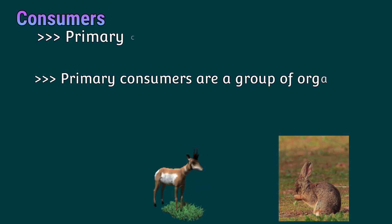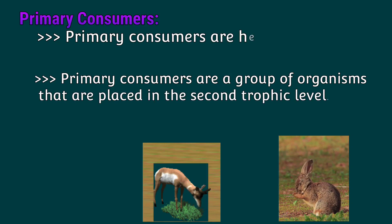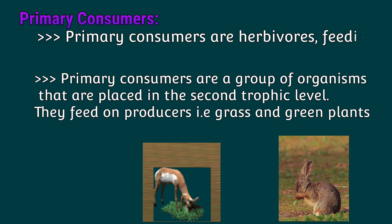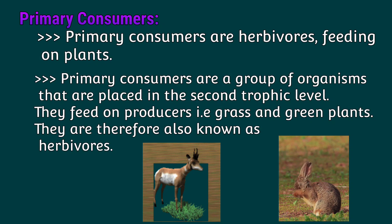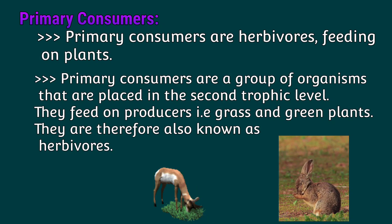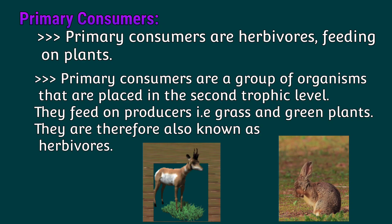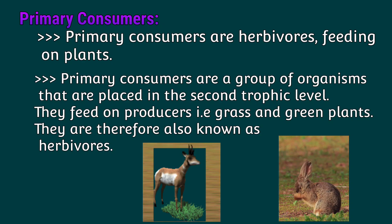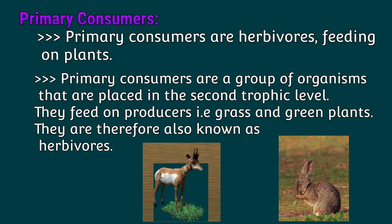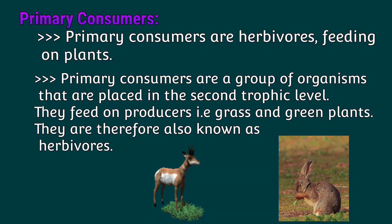Primary consumers are herbivores feeding on plants. They are a group of organisms placed in the second trophic level. They feed on producers — grass or green plants — and are therefore known as herbivores.